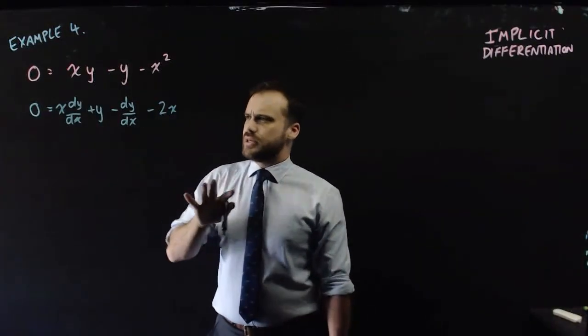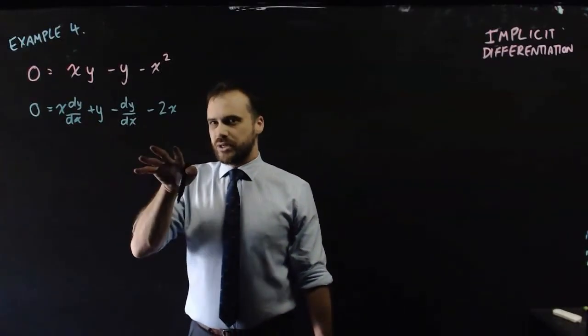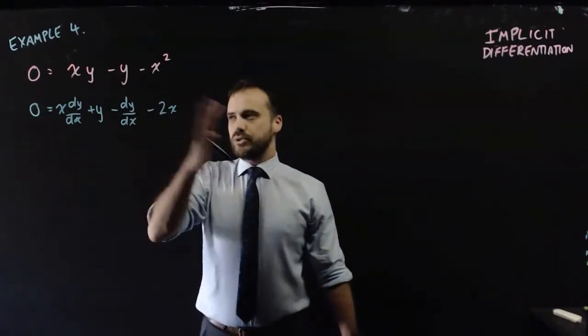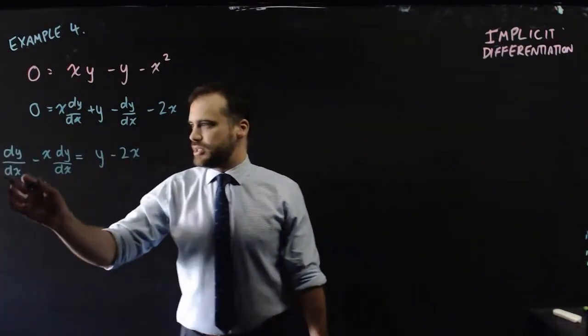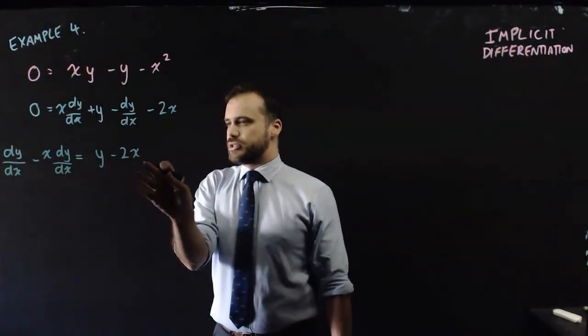So you can see what's happening here. We have a dy/dx here and we have a dy/dx here. What are we going to do? Move the dy/dx terms to one side. Keep all the other terms on the other side. We get something like this. dy/dx minus x dy/dx equals y minus 2x.